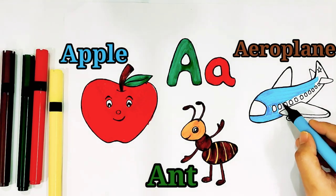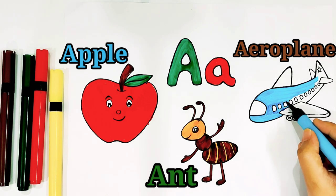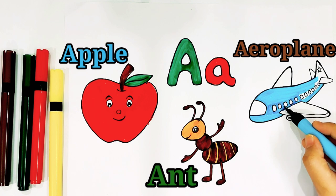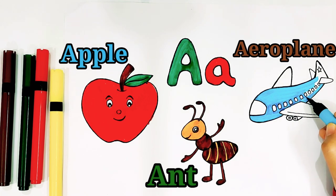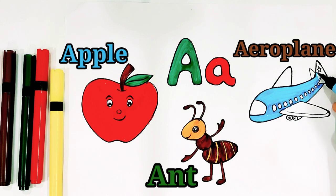A, B, C, D, E, F, G, H, I, J, K, L, M, N, O, P, Q, R, S, T, U, V, W, X, Y and Z. Now I know my ABCs, next time won't you sing with me?